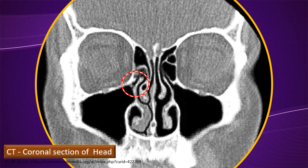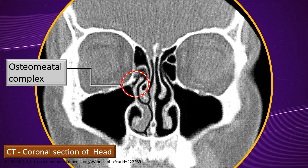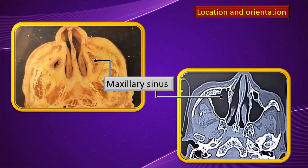An important component worth noting: the ENT specialist refers to this area as the osteomeatal complex. This is the region where the maxillary sinus opens into the nasal cavity through the lateral wall of the nasal cavity, or equivalently through the medial wall of the maxillary sinus. There are a number of structures in this complex, which will be discussed at a later stage.